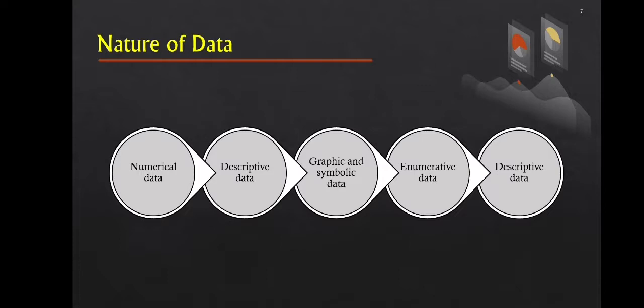Fourth, we have enumerative data. The majority of data is enumerative in nature. They are refined using mathematical methods to make them more meaningful and are referred to as statistical data. This is why various measurement scales are used to rate them. Fifth is descriptive data — all qualitative data may be descriptive. These can be expressed in the form of firm statements, and numerical values can be assigned to descriptive phrases, which can be reduced to numerical data if possible.